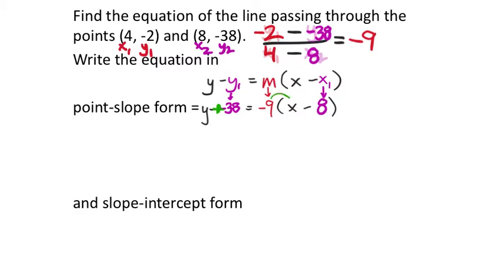Distributing: negative 9 groups of 1x gives negative 9x. And negative 9 groups of negative 8 gives positive 72. So we still show y plus 38 on the left side. That looks pretty good, but it's just not finished. Right here, we need a principle of equality because I don't want this plus 38 with my y.